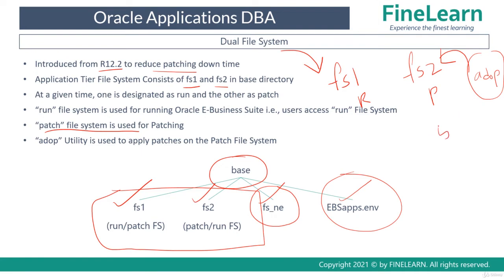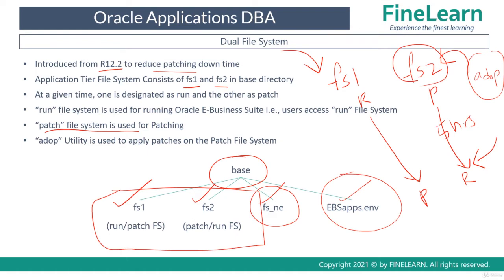For example, with FS1 as run and FS2 as patch, all end users are connected to FS1 and business operations are running normally. Using ADOP, I apply patches on the patch file system FS2. Even if the patching activity runs for five hours, there is no impact on end users — the system continues to run as usual on FS1. After five hours, I flip the file systems: FS1 becomes patch and FS2 becomes run.